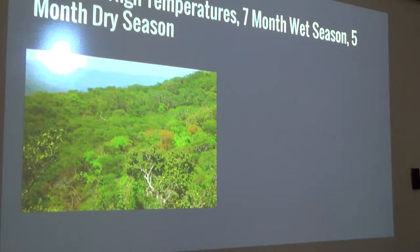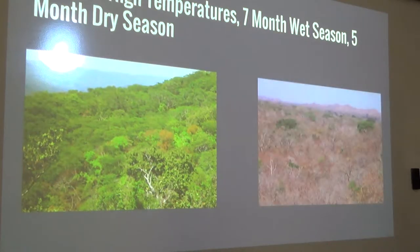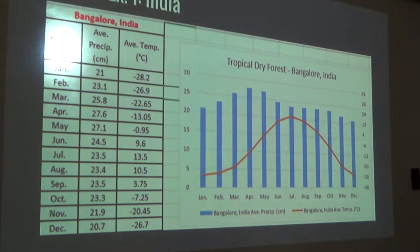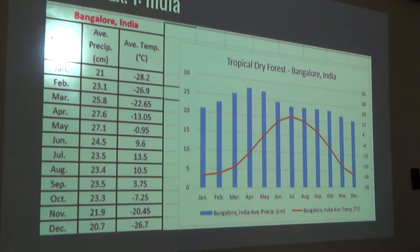During this time the tropical dry forest experiences about 200 centimeters of rainfall. During the rainy season, productivity is the highest, and during the dry season the trees lose their leaves so transpiration is lower. If they did not evolve this adaptation, evaporation rates would exceed precipitation rates.